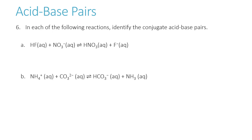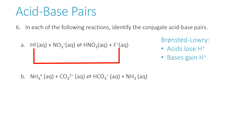In each of the following reactions, identify the conjugate acid-base pairs. To do this, we use the Bronsted-Lowry definition: acids lose hydrogen ion and bases gain hydrogen ion. We pick two things in the equation related by the loss or gain of hydrogen. HF loses a hydrogen to become F⁻, so HF is acting as an acid and fluoride ion is the conjugate base. Looking at nitrate and nitric acid: NO3⁻ gains H⁺ to become HNO3, so NO3⁻ is the base and HNO3 is the conjugate acid.